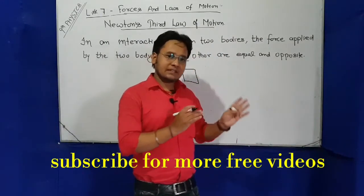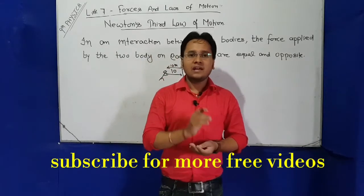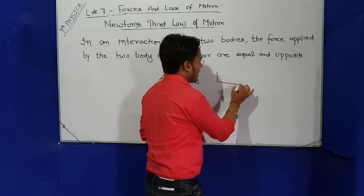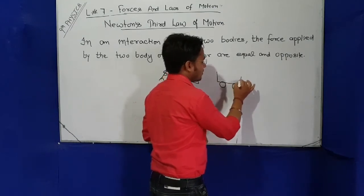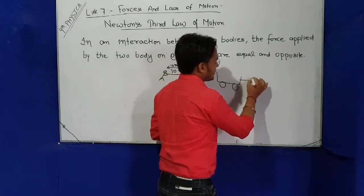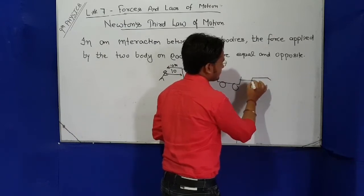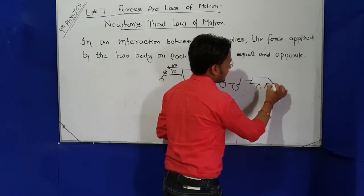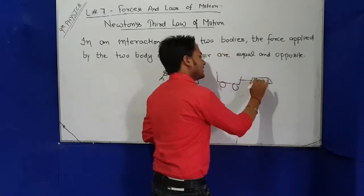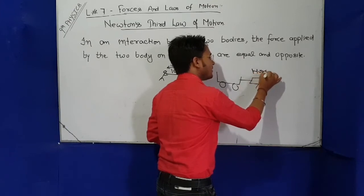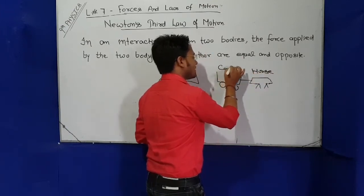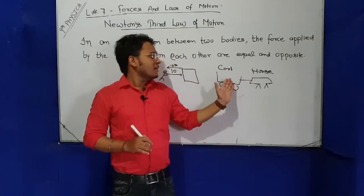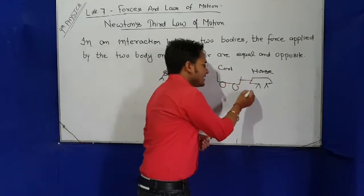Now let's see the actual confusion. Everyone knows the law, but the actual confusion comes with an example. One is a cart, and I will try to make a drawing of a horse and cart. So horse is pulling the cart.